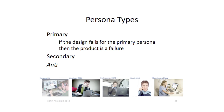In this example you've got three different products — a set of personas for a hardware product. We have Cautious Carl, Businessman Brad, Mobile Mike, and Mainstream Mary.